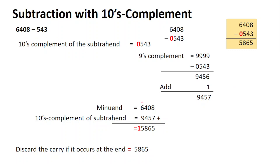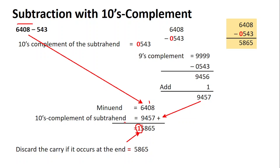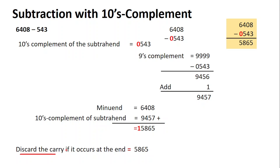Now write the minuend as it is and write the tens complement, then add them together. Eight plus seven is fifteen (carry one), five plus one plus four is ten (carry one), four plus five is nine — carry one — six plus nine is fifteen. You notice there is one extra carry generated. The given number was four digits and you have five digits altogether, so one extra carry is there. In tens complement, simply discard the carry and write the remaining number as your result.